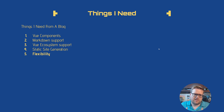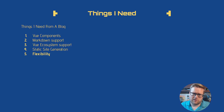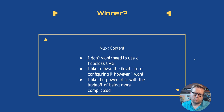For me, things I need from a blog are: Vue components, Markdown support, Vue ecosystem support, static site generation, and flexibility. Many of these are offered by all three. I went back and decided flexibility is most important to me. The winner for me was Nuxt content — I don't want to use a headless CMS, I don't care much for GraphQL so Gridsome is out, and I just want the flexibility to configure things however I want. It'll probably be more configuration, but I like that trade-off of power for complexity.